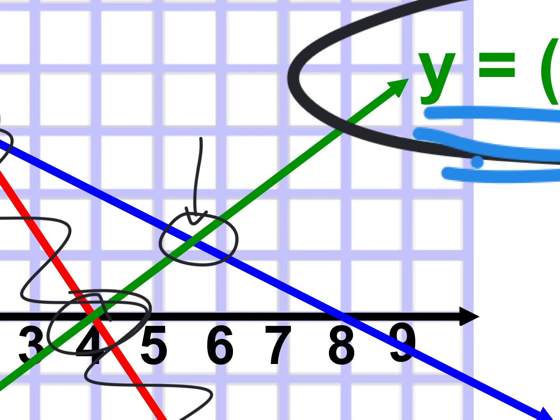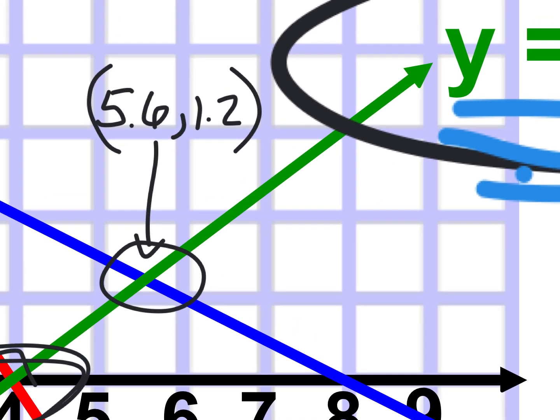Now mine says 'intersection' — X equals this, Y equals that. Please compare yours with the kid next to you. Mine says 5.6 comma 1.2 — raise your hand if yours says that. Who's got something very close? Someone got 5.5 and 1.3.